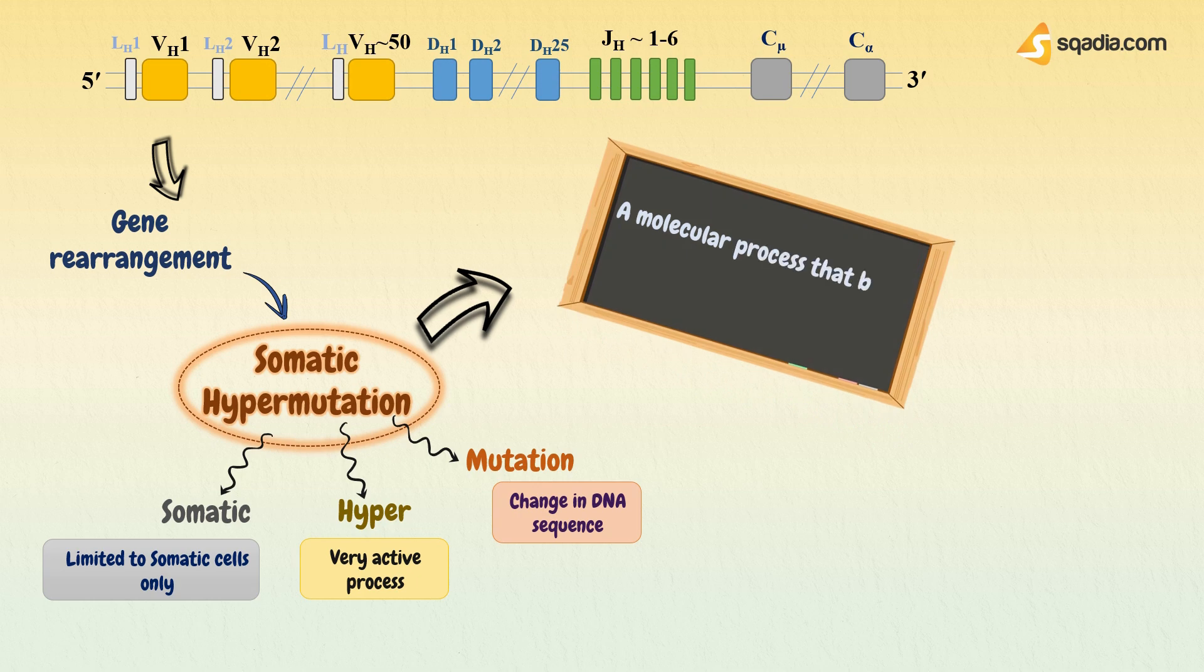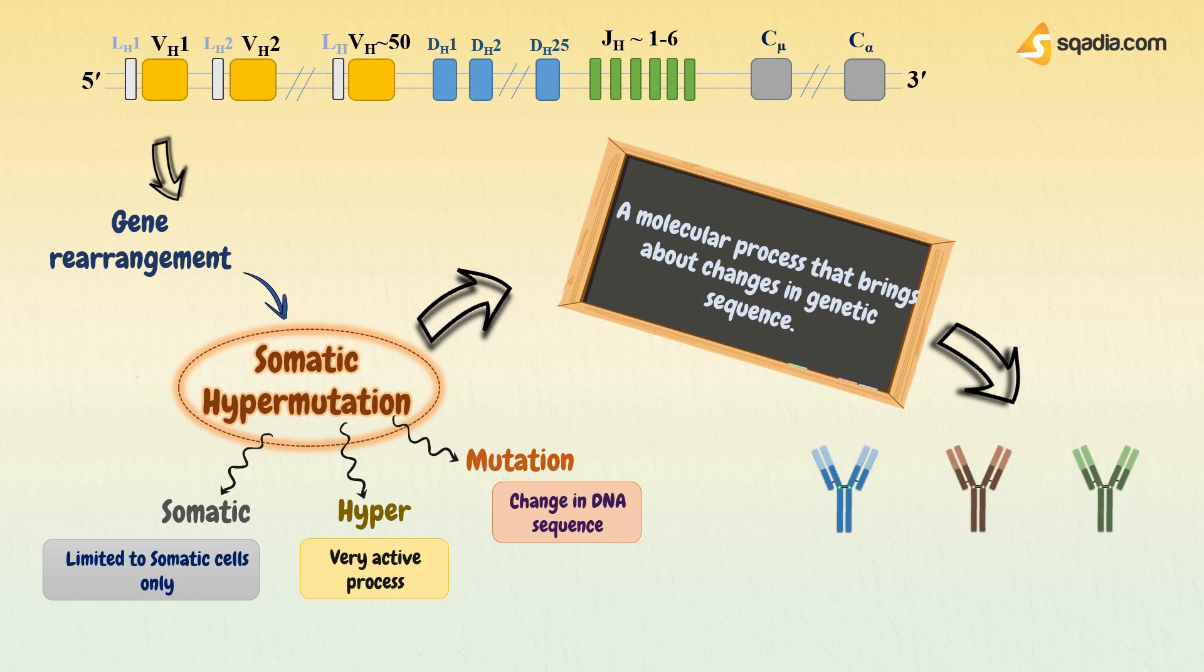Somatic hypermutation is a molecular process that brings about changes at certain points in genetic sequence. That ultimately brings about changes in gene expression and thus protein synthesis. These changes produce antibodies with different antigen binding capacities or affinities. Those that have good affinity with antigen will work efficiently and will be selected and preferred over those with less binding capacities.